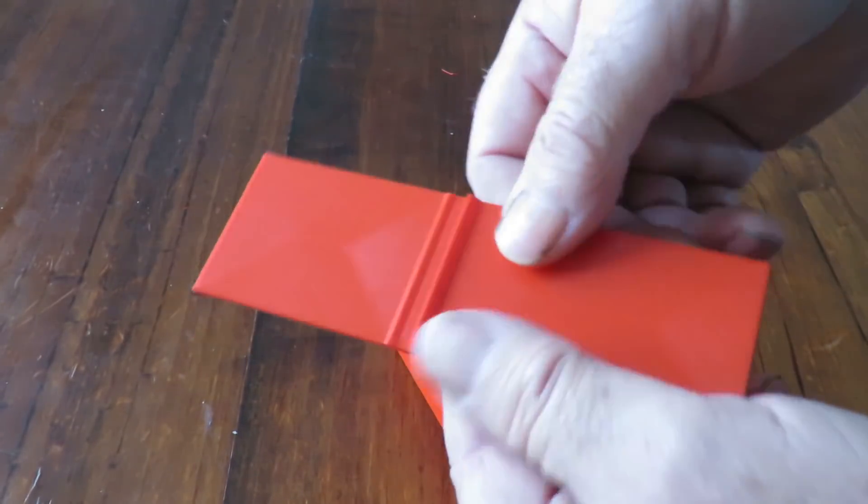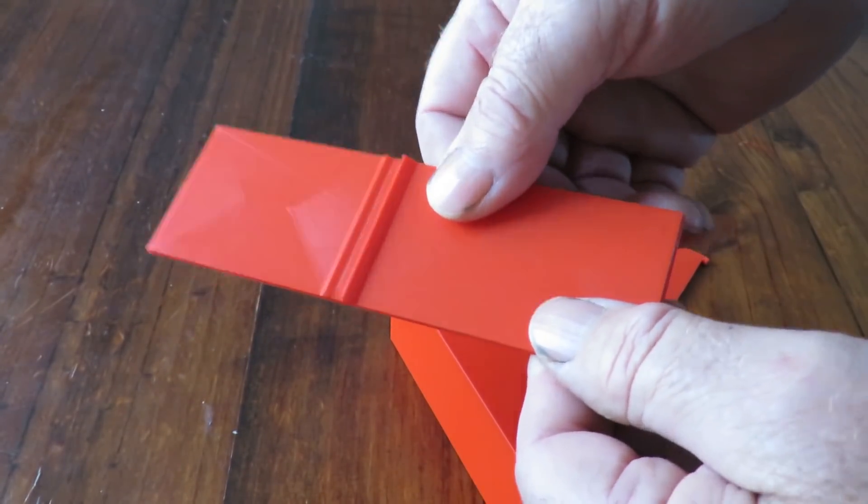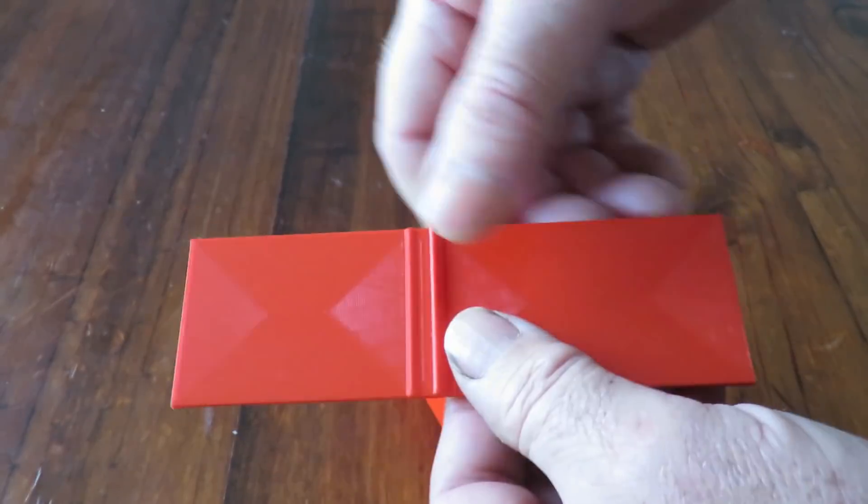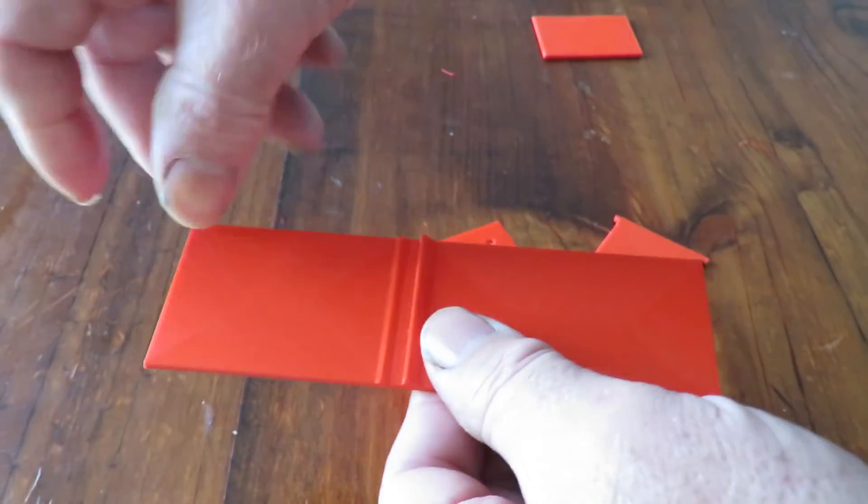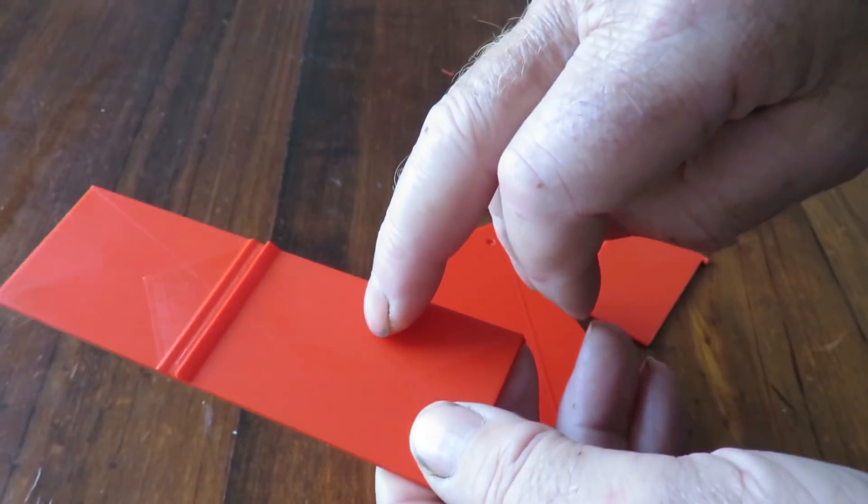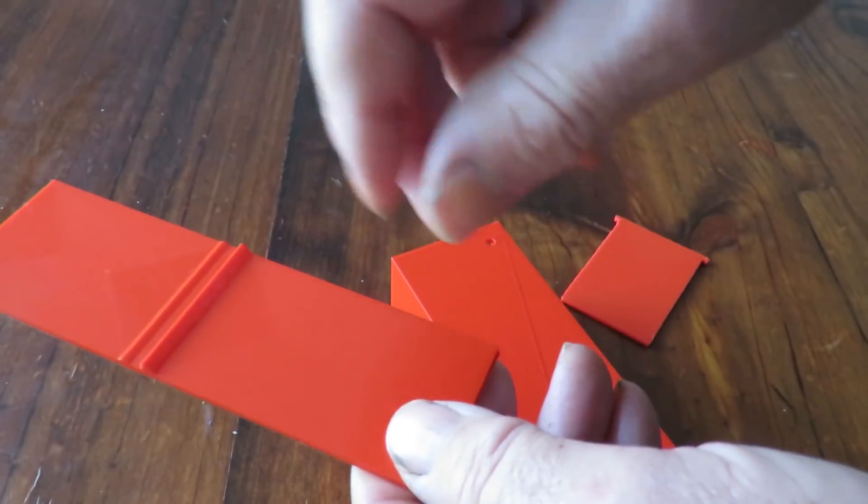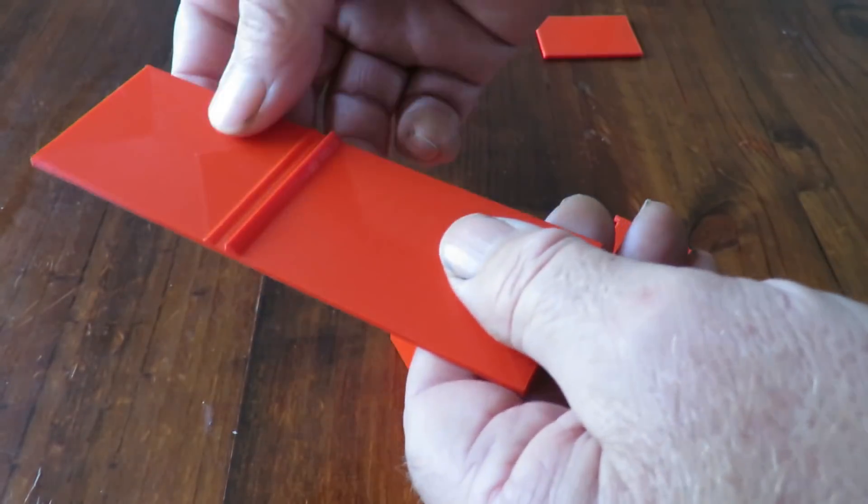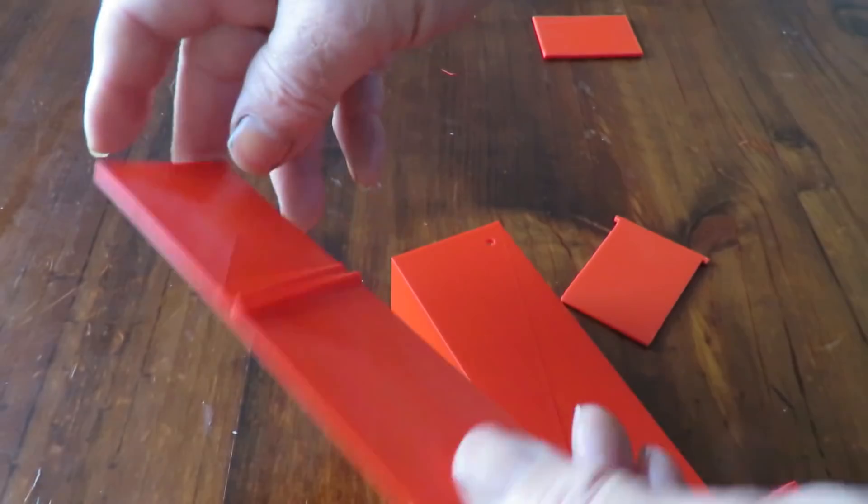Another thing after printing this out, I thought, well, what I should have done, which I will do on version three, is pop a little ridge around the edge of this as well. And that way, like if you're using cornflakes or broken up biscuits or whatever, they'll actually stay in the tray rather than dropping off the side. So that'll be the next version.